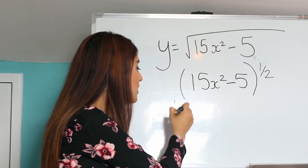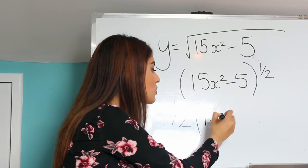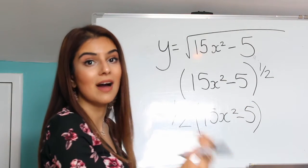So differentiating the outside part and keeping the inside part the same, we would get half on the outside. The 15x squared minus 5 would be the same. And then a half minus 1 would be minus a half.